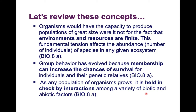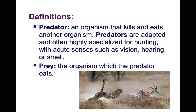Let's start with a couple of definitions to write down in your note taker. A predator is an organism that kills and eats another organism. In this picture, the cheetah is the predator — adapted and often highly specialized for hunting with acute senses such as vision, hearing, or smell. The prey, the gazelle, is the organism that the predator eats.